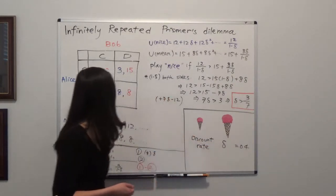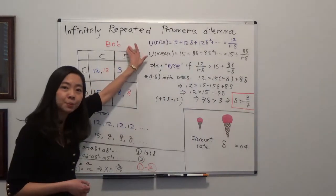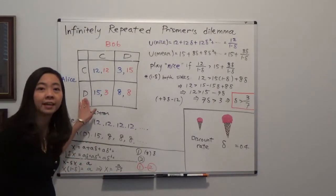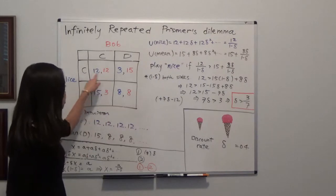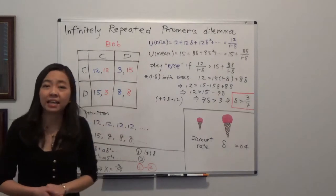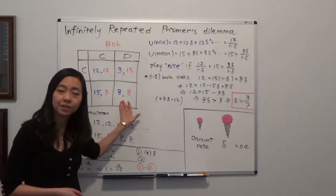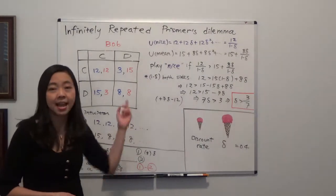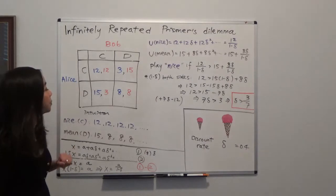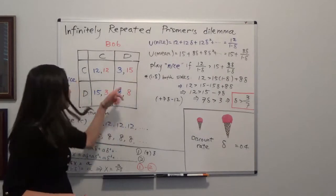Going back to prisoner's dilemma, we have two players, Alice and Bob. Each of them has two strategies: cooperate or defect. If they both cooperate, they both get 12 in this example. If they both defect, they both get 8. If one cooperates and the other defects, the one who cooperates gets 3 and the one who defects gets 15, and vice versa.